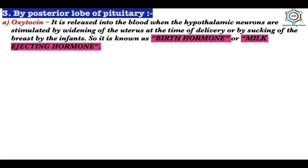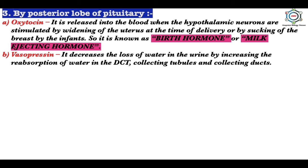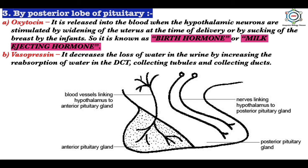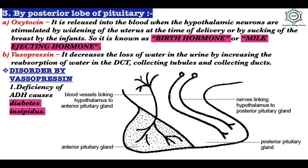The posterior lobe of the pituitary secretes two hormones. First, oxytocin, which is released into the blood when hypothalamic neurons are stimulated by widening of the uterus at the time of delivery or by sucking of the breast by infants — it is known as the birth hormone or milk-ejecting hormone. Second, vasopressin, which decreases the loss of water in urine by increasing reabsorption of water in the DCT, collecting tubules, and collecting ducts, and stimulates contraction of smooth muscles of the arterioles, enhancing arterial blood pressure — thus it is known as vasopressin.